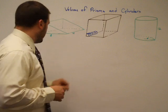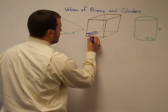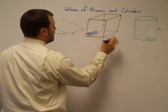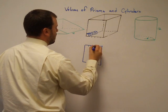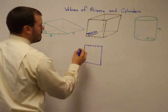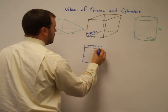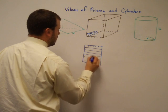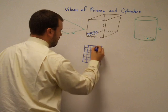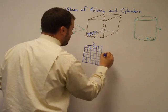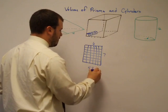What we want to figure out is how many could we fit in one layer? If this is one, two, three, four, five, six wide, and maybe it's seven deep, what you would fit in one layer would be six by seven, or 43 units squared.